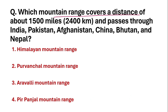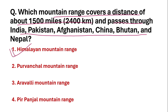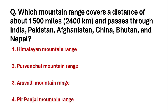Which mountain range covers a distance of about 1500 miles (2400 kilometers) and passes through India, Pakistan, China, Nepal, Bhutan, and Afghanistan? The correct answer is the Himalayan mountain ranges, which span 2400 kilometers across all these countries.